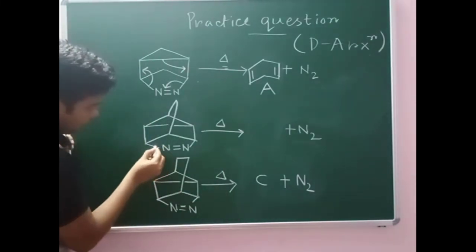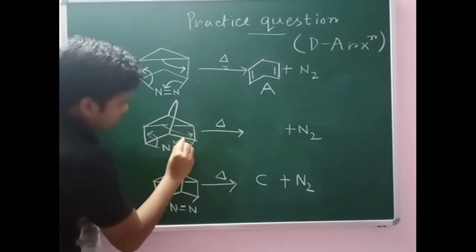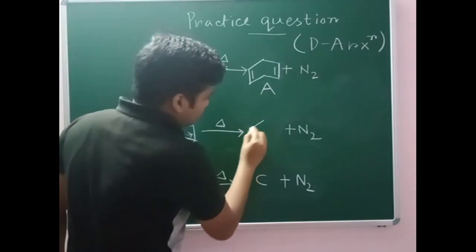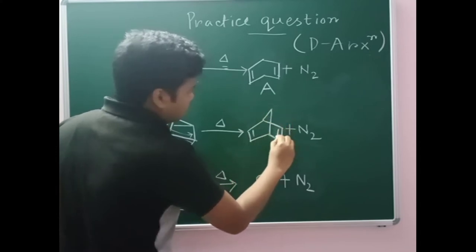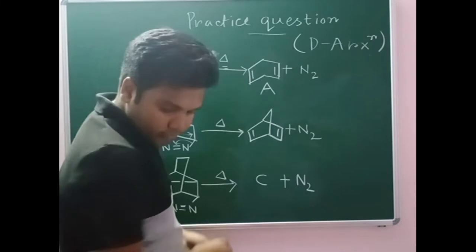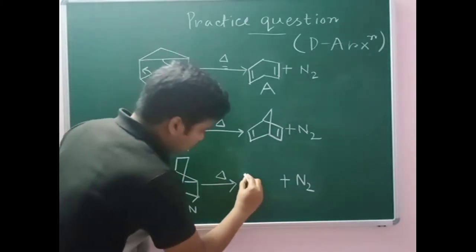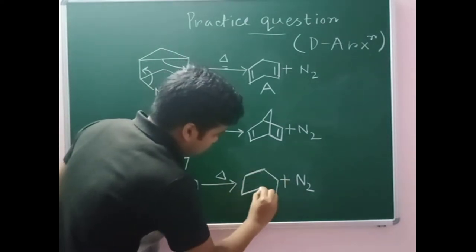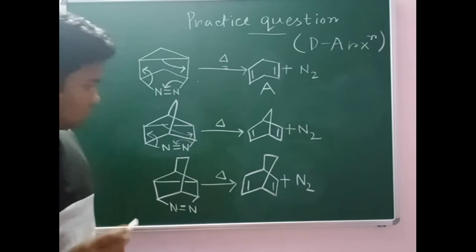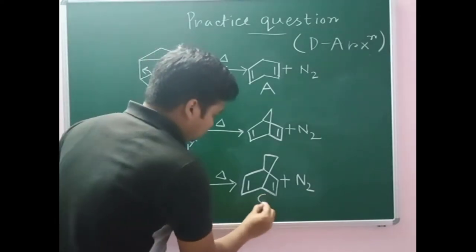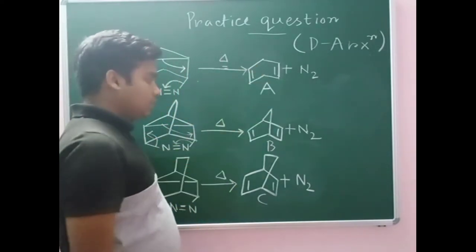Now for product B: this bond will come here, this bond will be cleaved, and this bond will be cleaved. For product C directly, this will be the product. So now I have got my three products A, B, and C.